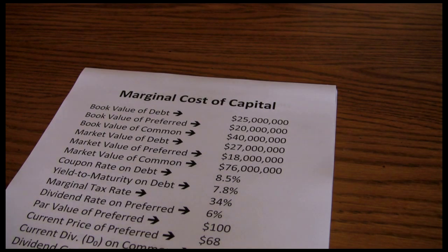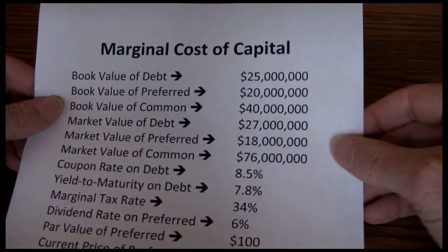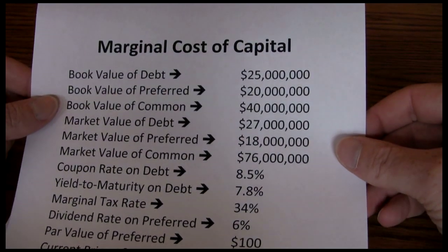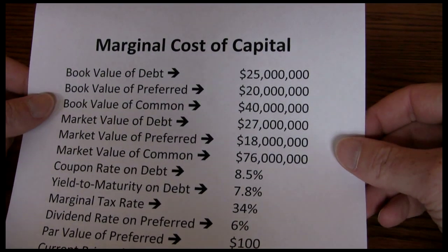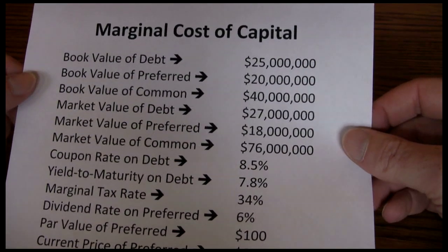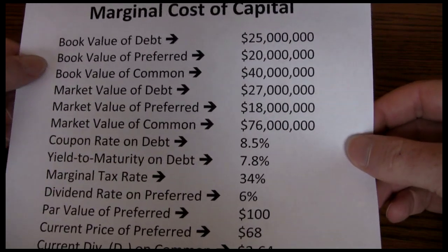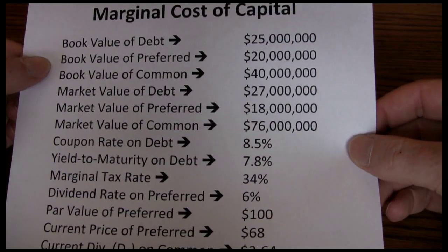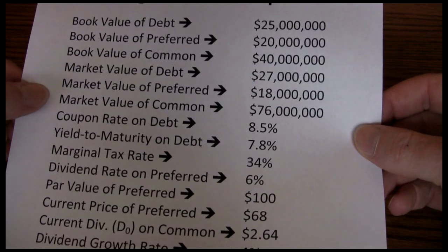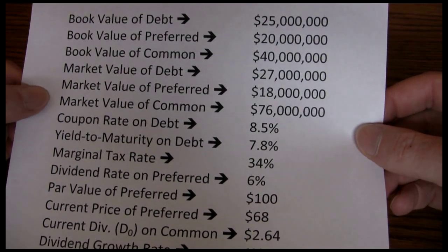The starting point is our data set. Marginal cost of capital tells us how much the company is spending for each dollar of financing it's using. A typical marginal cost of capital problem in this class will be presented with book values of debt, preferred stock, and common stock, as well as market values of debt, preferred stock, and common stock.